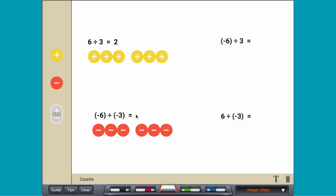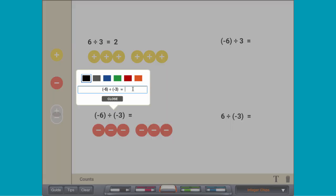There are two groups, so negative 6 divided by negative 3 equals positive 2.